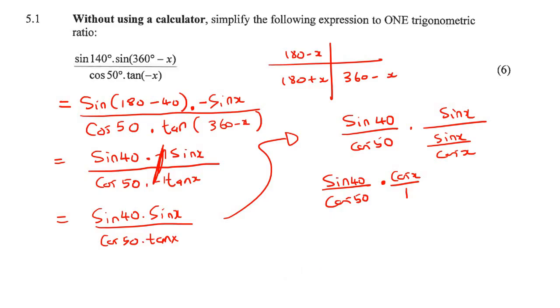So change any one of these. I'll change the top one to cos 50°. We still have cos 50° at the bottom. We're not changing that—that would be silly because then nothing would cancel. So if we cancel now, we end up with the final answer of cos x.